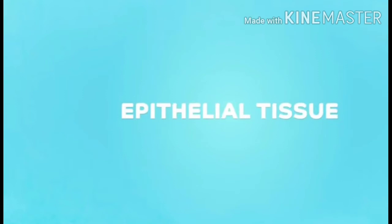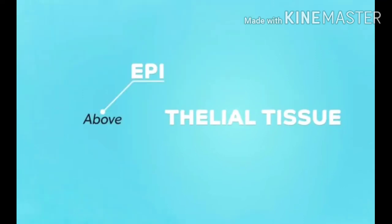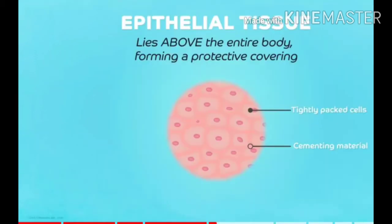First of all, we will discuss about epithelial tissue, which is related to skin. 'Epi' means above part — so the above part, that is our skin, is called epithelial tissue. It lies above the body and forms a protective covering, as skin protects our body organs very properly. The cells inside the skin are very tightly packed, held together by a cementing material which is filled inside the epithelial tissue.